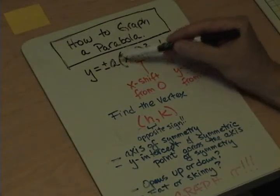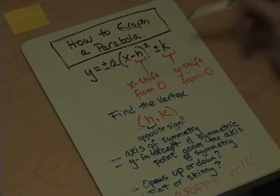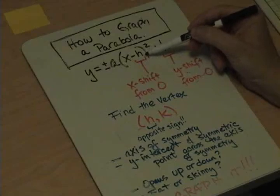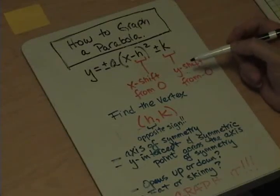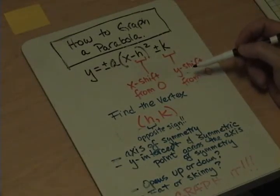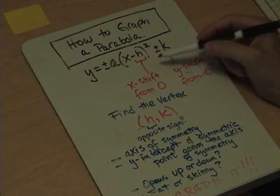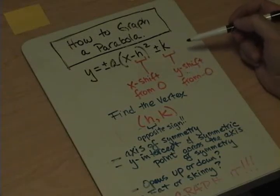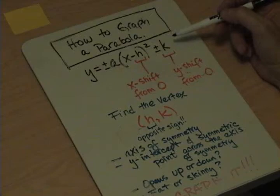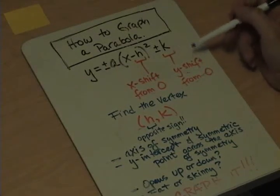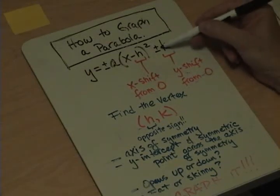This is vertex form where you have a number possibly on the outside of the parentheses, x minus a value, all squared, plus or minus another value. This value with h is the shift in the x-axis from zero. Remember, all parabolas like to live at the origin at (0,0), but if we put a negative number in here, the shift is in the positive direction on the x-axis. The number outside — the k value — has the same sign as the value that's out there.